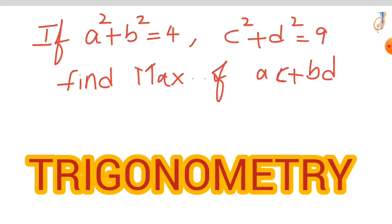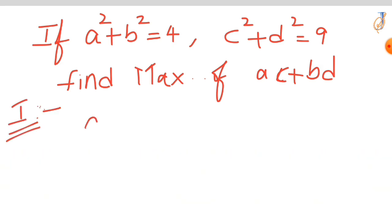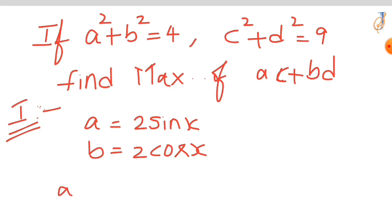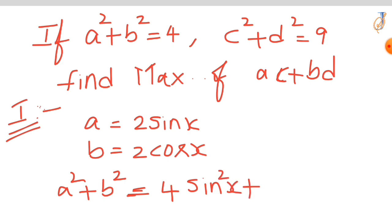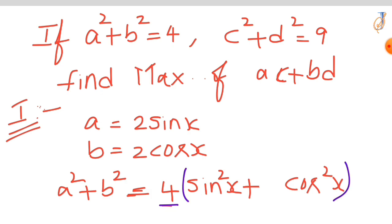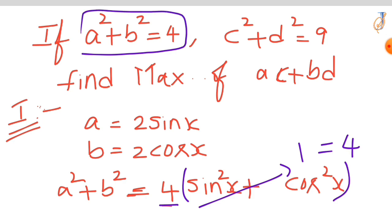First we are going to solve by the trigonometric method. Let us assume a equal to 2 sin x and b equal to 2 cos x. If you do a² plus b², that gives 4 sin²x plus 4 cos²x. Take 4 as common, so 4 times (sin²x plus cos²x). Since sin²x plus cos²x equals 1, this gives 4 times 1, which is 4 — the same as our given equation. That's why we assumed a equal to 2 sin x and b equal to 2 cos x.